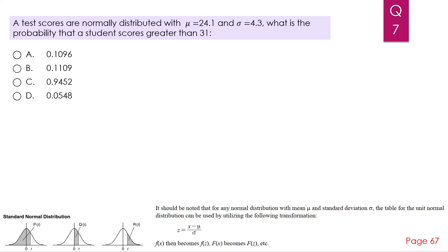In case we have a normal distribution with μ and σ, we can use the table for the unit normal distribution, but we need to standardize the value x. You can check that on page 67. z = (x - μ) / σ. So we have (31 - 24.1) / 4.3, and that equals 1.6.